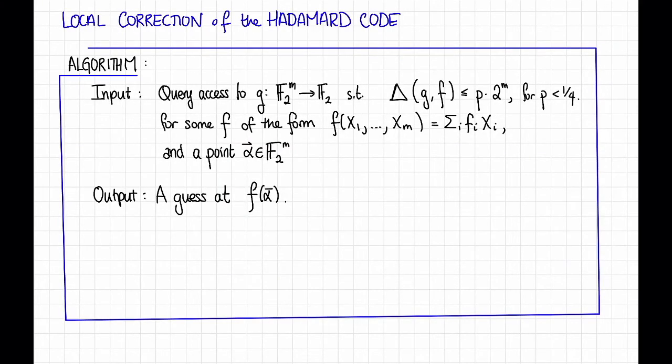So we're going to establish that the Hadamard code is an LCC by giving an algorithm to locally correct it. The input to this algorithm is going to be first, query access to some corrupted codeword, and second, the index of some coordinate that we want to evaluate.